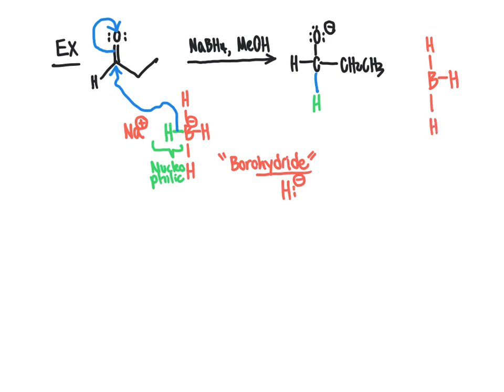For the record, this BH3 is able to donate up to three more hydrides to carbonyl groups. Thinking about stoichiometry, you only require one mole of borohydride per four moles of aldehyde or ketone, because each borohydride molecule can donate four units of hydride.